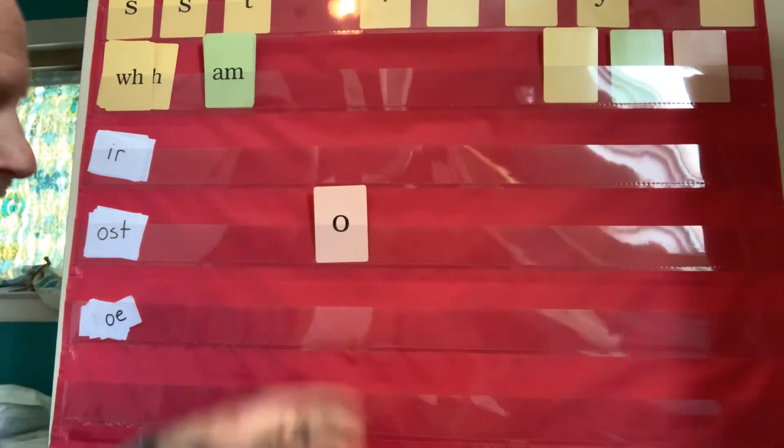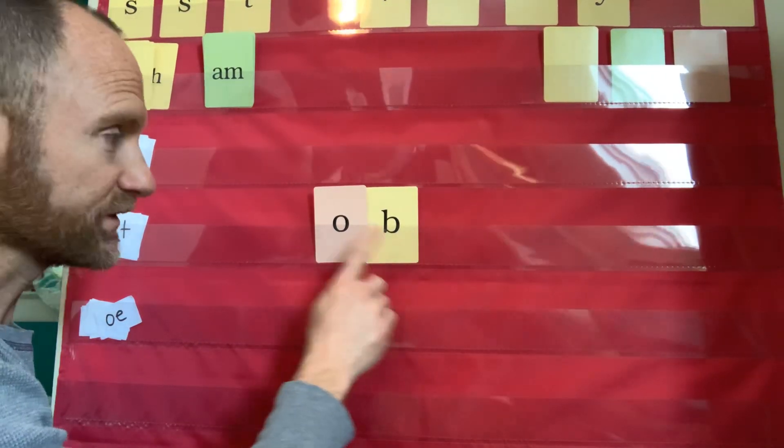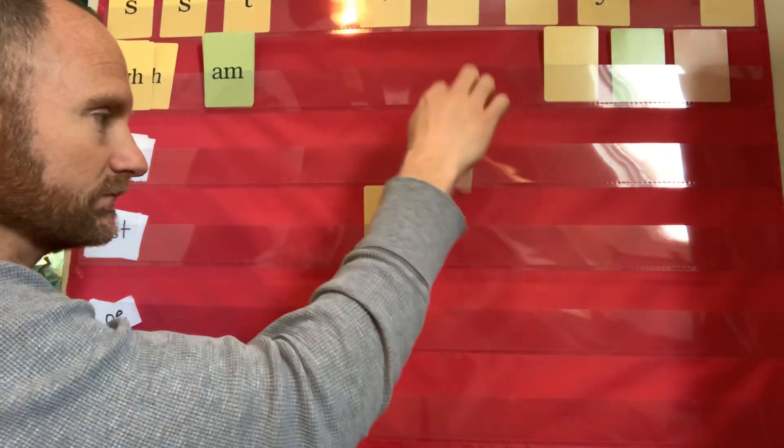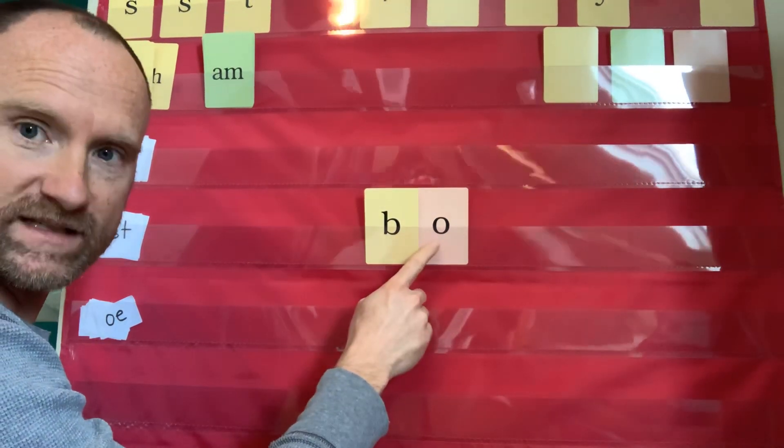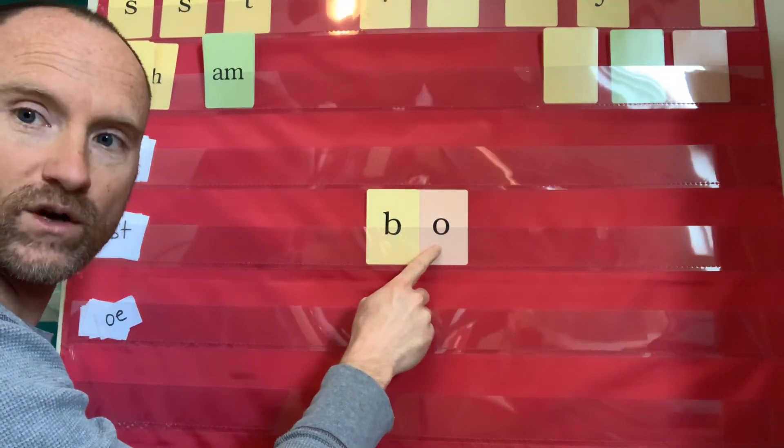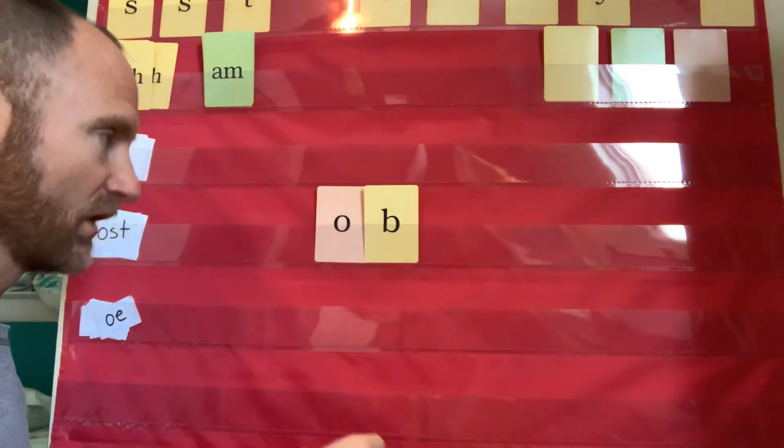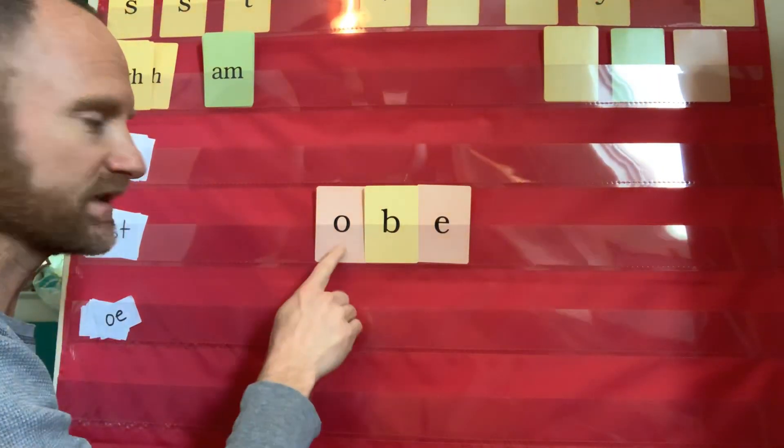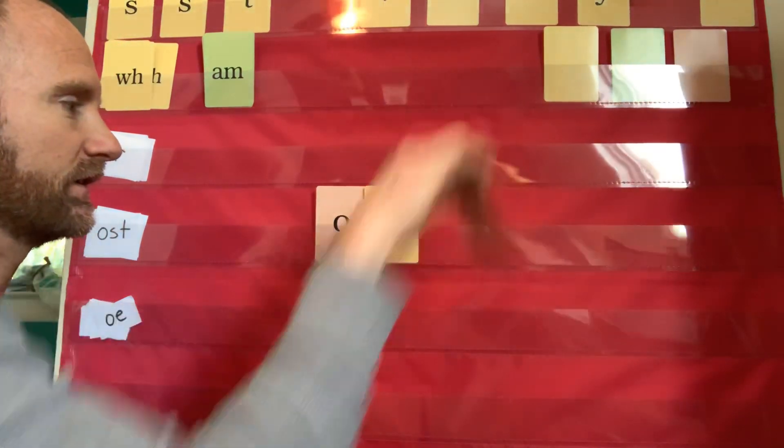Real quick. This is just review. This is just good practice. Think about what type of syllable this would be. It's closed. So what sound's that O gonna make? Ah. Blend it. Ob. Now the vowel's at the end. This is now an open syllable. So what sound's that O gonna make? O. Blend it. Bo.